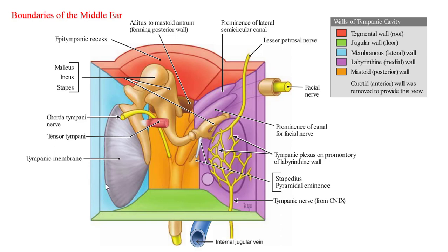The lateral or membranous wall separates the middle ear from the external acoustic meatus and is formed mainly by the tympanic membrane along with the tympanic ring and sulcus, and partly by the squamous temporal bone in the region of the epithympanic recess. The roof or tegmental wall separates the middle ear from the middle cranial fossa and is formed by a thin plate of bone called the tegmen tympani. The floor or jugular wall is formed by a thin plate of bone which separates the middle ear from the superior bulb of the internal jugular vein.